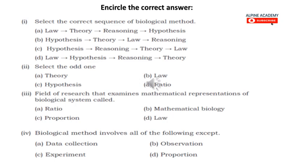In number 4, biological method involves all of the following except — we have to find which one is the exception. Data collection is in biological method. Observation is also in biological method. Experiment is also in biological method. But proportion is not in biological method. So this answer is D — proportion.